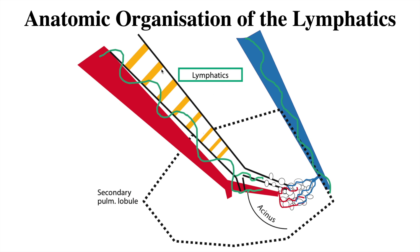Coming to the lymphatics, there are two divisions: one that follows the bronchioles and the other which follows the septa.